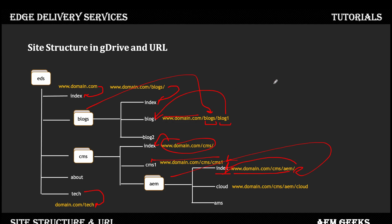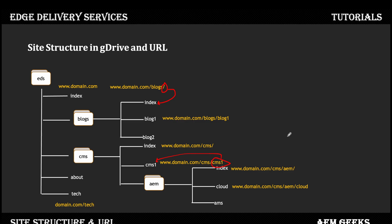One important thing: if you are accessing a folder, you add a forward slash at the end — it will always render the index page inside that folder. If you are accessing a specific document, you do not add a slash. So slash at the end means you're targeting a folder and it renders the landing index page; no slash means you're accessing a specific document directly.